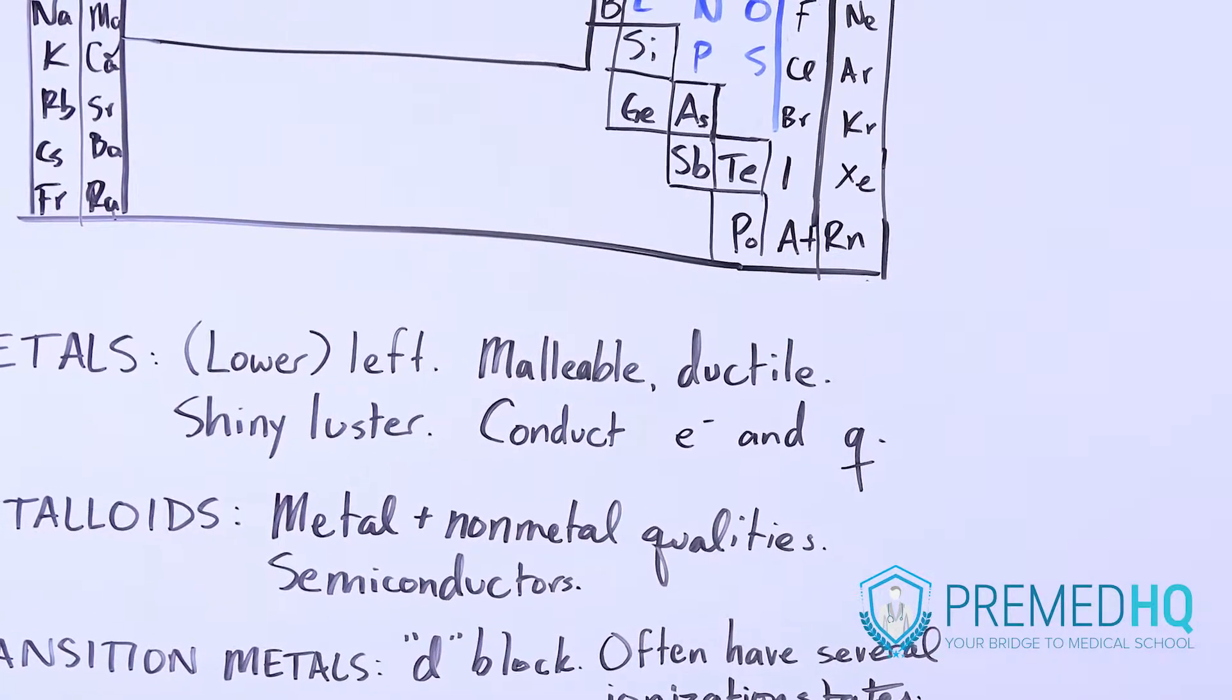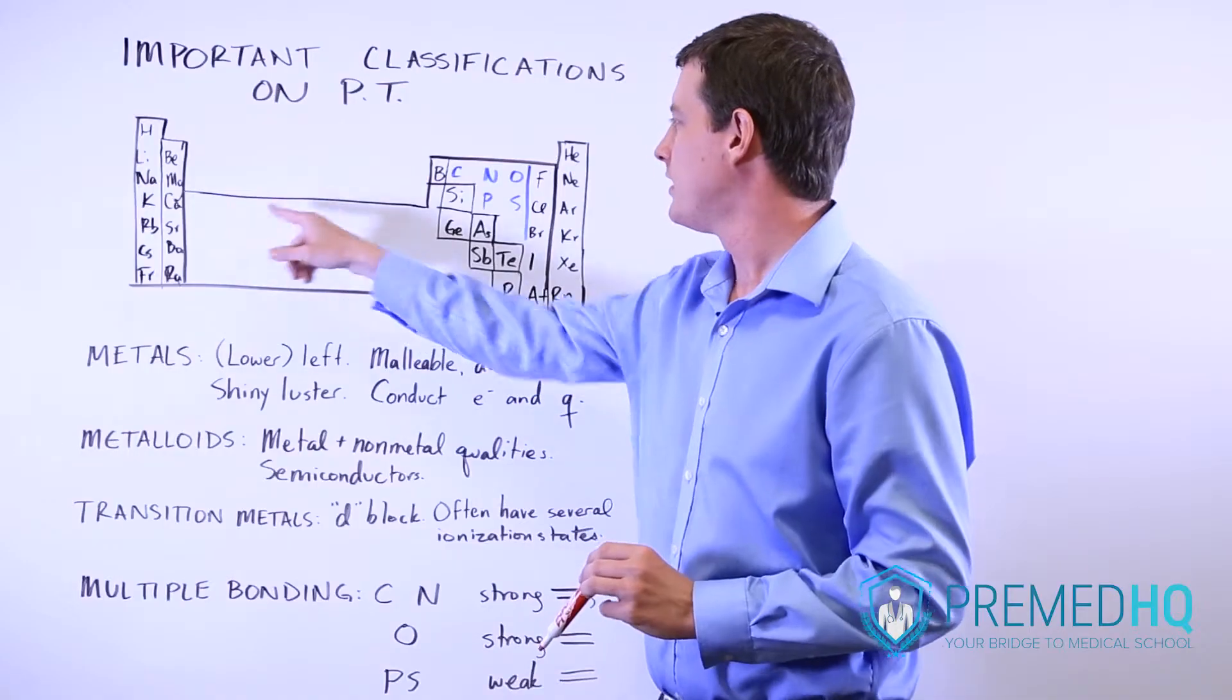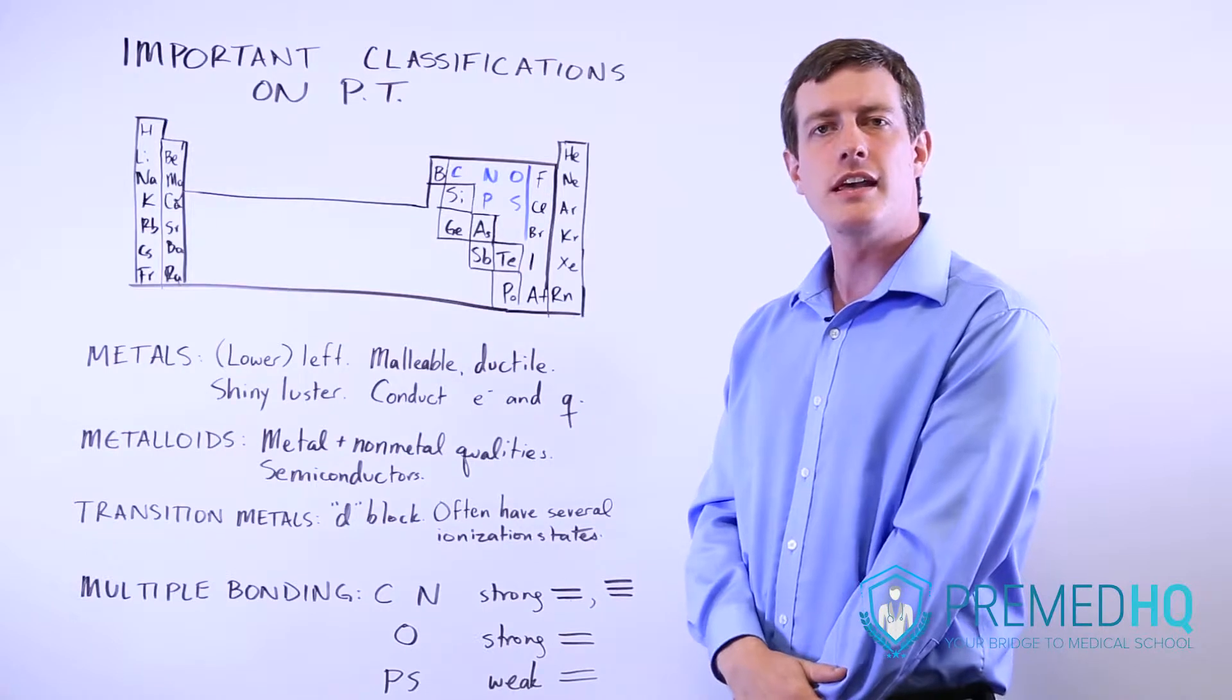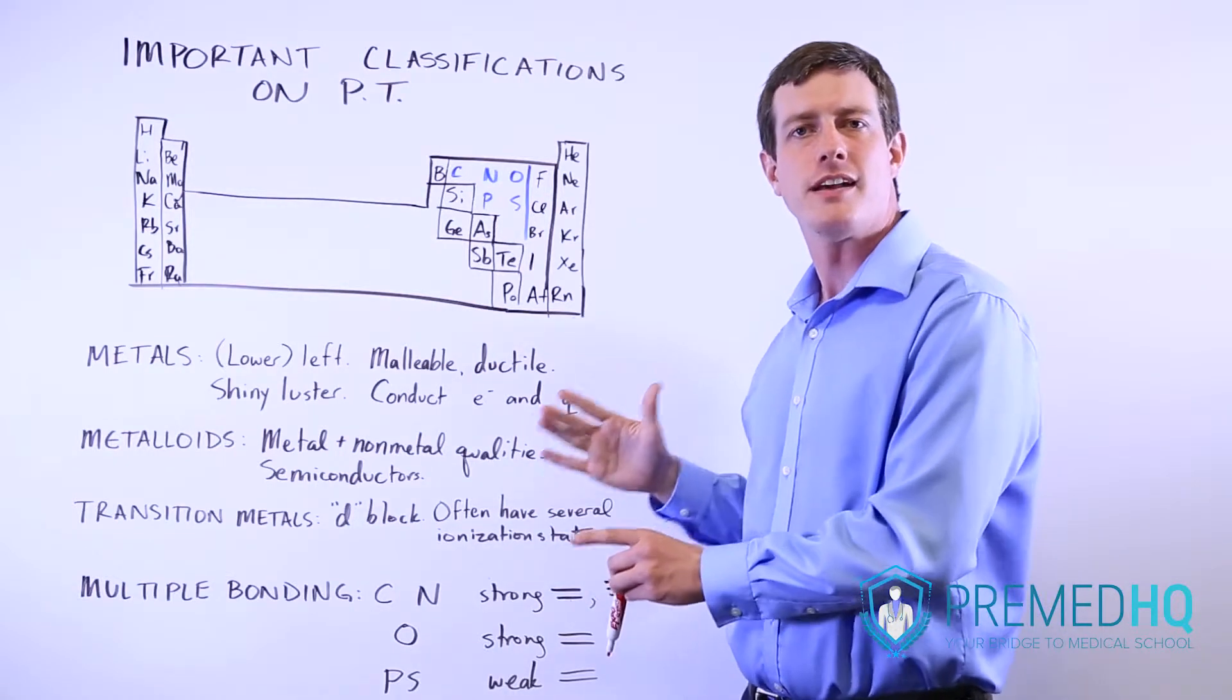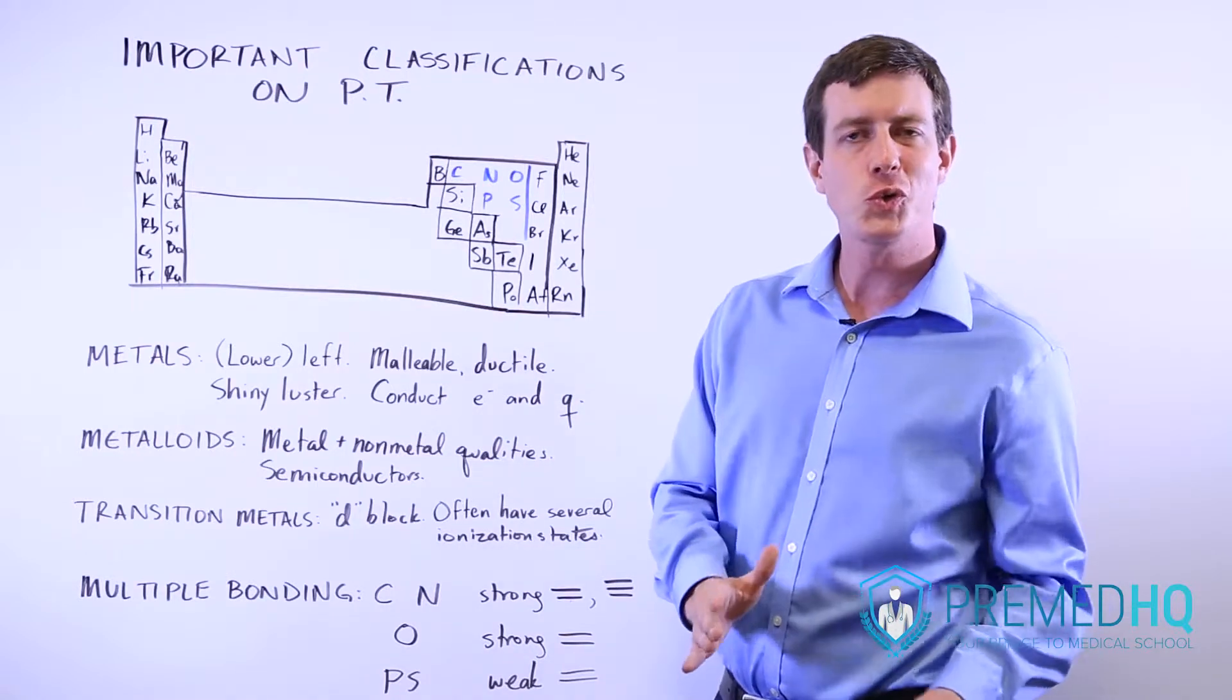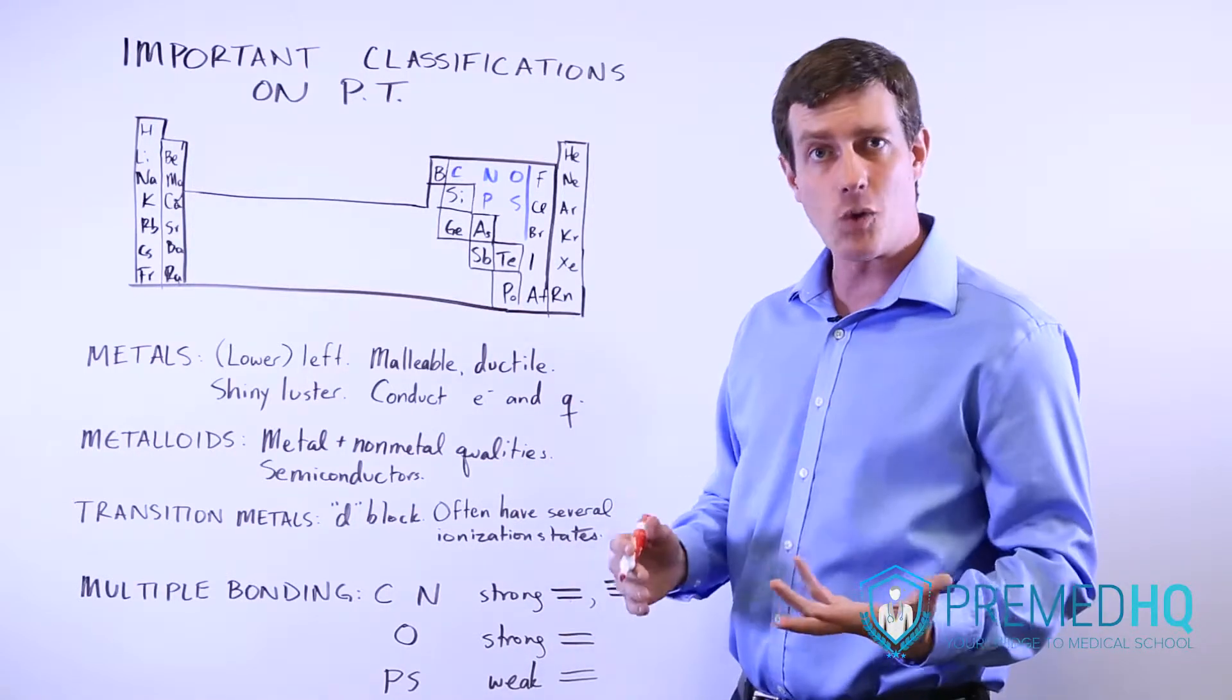The transition metals are another group that's represented by this D block here, and they're called transition metals because they can transition between multiple ionization states. And so you might see iron 2, iron 3, and so on.